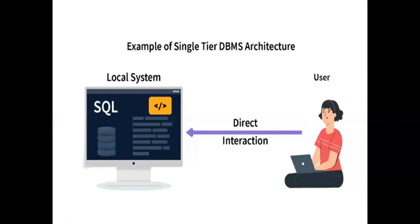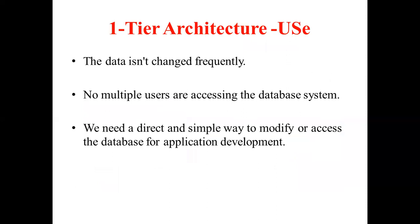This is the simplest kind of DBMS architecture, where all components — server, database, and client — reside on a single system. It is mainly useful when there are no frequent changes required, and it is mainly suitable for programmers, database designers, or single-user access. No multiple users can access the data at the same time, and we need a direct and simple way to modify or access the database for application development.